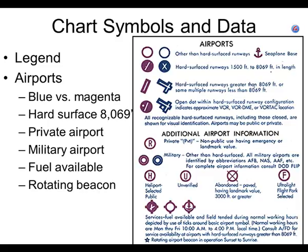Does anybody know what the blue circles mean? If you look right in the middle, there's a blue symbol — and blue means it has a control tower. That doesn't mean the tower operates 24 hours a day, but it does have a control tower. Down a bit you'll see a magenta circle — the runway is more than 8,069 feet.